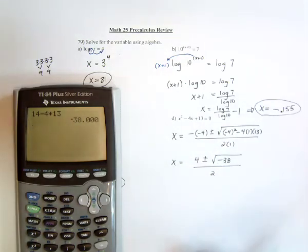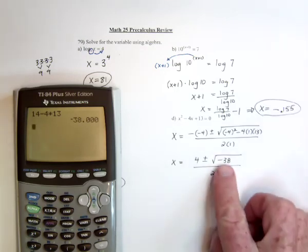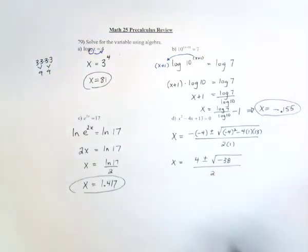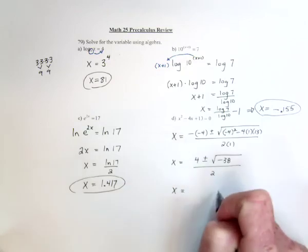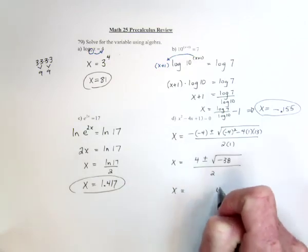Let's see, are there any perfect squares in 38? Do we need to reduce that? I think not, because this is 19 times 2, both of which are prime numbers. So really the only thing we have to do is say the square root of a negative is an imaginary number.